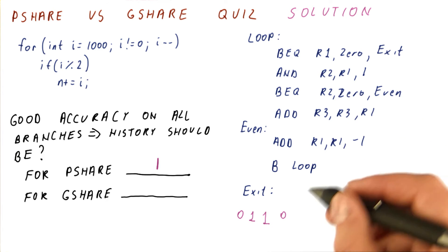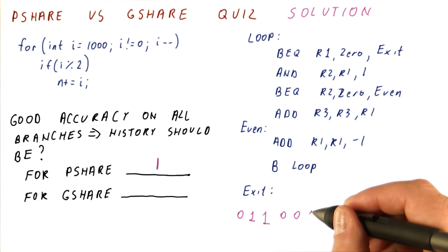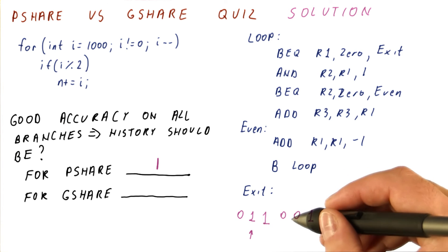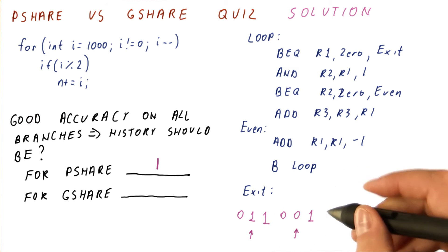Now it's going to be not taken here, followed by a taken here. And this pattern will repeat. So really, we need this to be part of the history when we are predicting this.